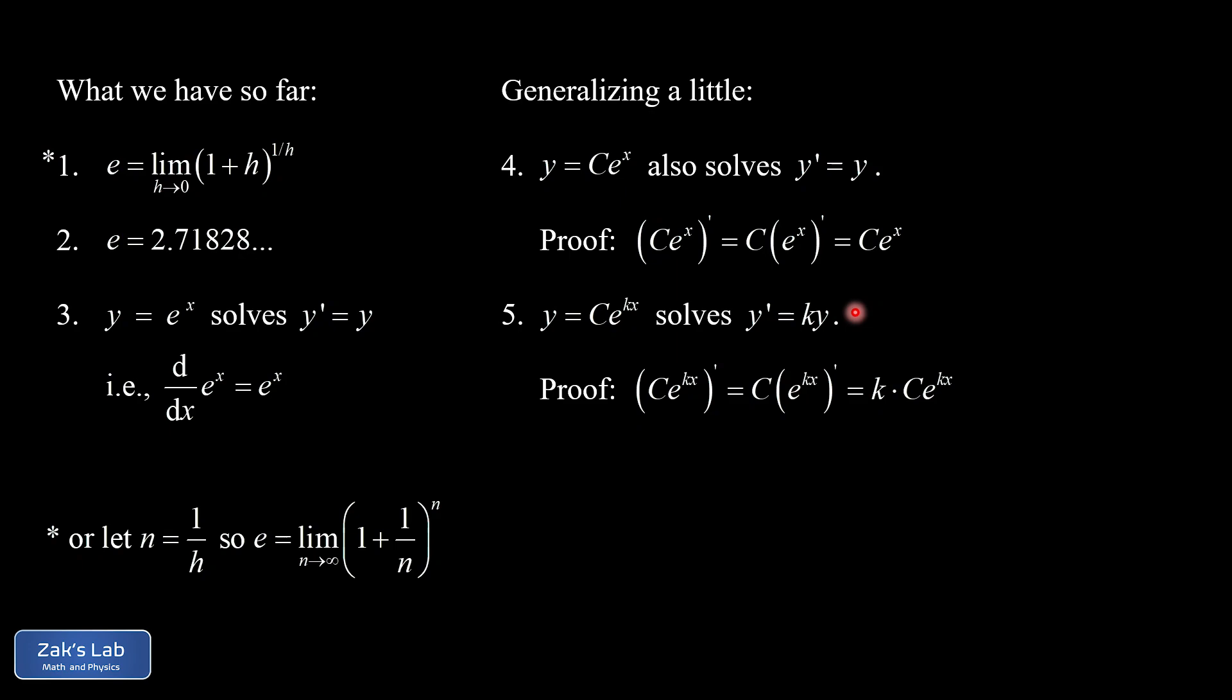And this is one huge contributing factor to e appearing everywhere in math and physics. This equation says that the rate of change in a quantity is proportional to the amount. And this is precisely what we expect for modeling growth, as in population growth and compound interest, which we both refer to unsurprisingly as exponential growth. But it also works for exponential decay phenomena like nuclear decay and the discharging of a capacitor, among many, many other simple models that we see in physics, biology, chemistry, economics, and engineering.